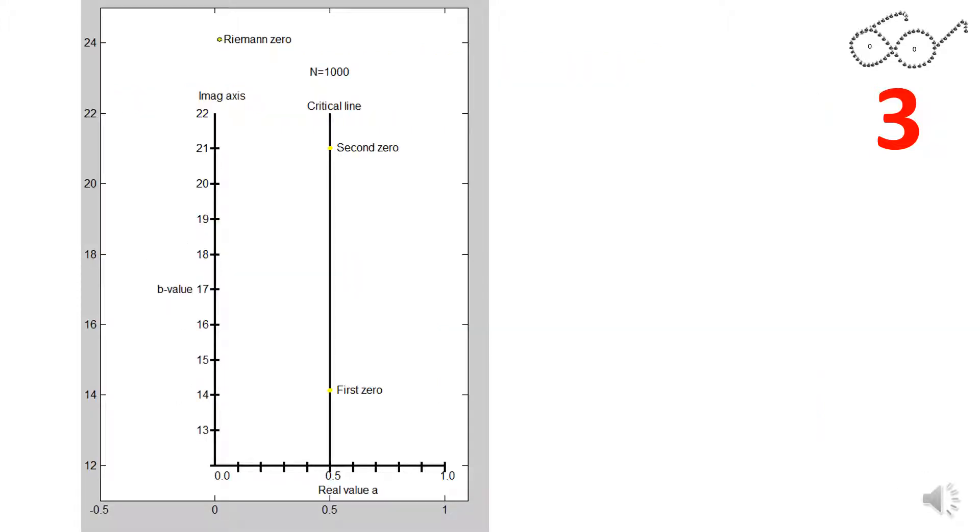This is a small part of the complex plane where you can see the first two zeros of the zeta function as yellow dots. Riemann said that all yellow dots are on a line in the middle of the strip. I say that the zeros of Askeland's condition must be 0 for every Riemann 0.